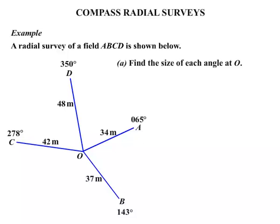In part A we need to find the size of each angle at O. So there's some angles at O there, four angles that we need to find. To find them we will need to look at the bearings. Those bearings are measured from the north. So we'll concentrate on those.